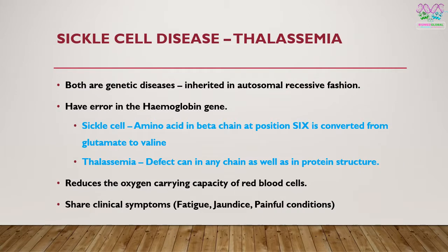A brief overview of similarities: both sickle cell disease and thalassemia are genetic diseases inherited in an autosomal recessive fashion. Both reduce the oxygen-carrying capacity of red blood cells, and both disorders share clinical symptoms like fatigue, jaundice, and painful conditions.